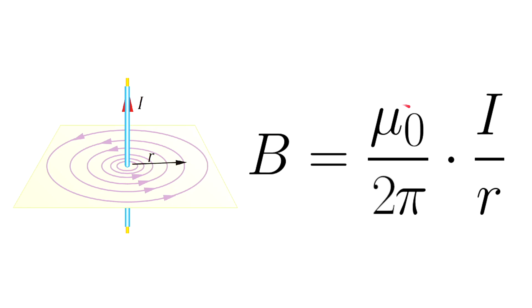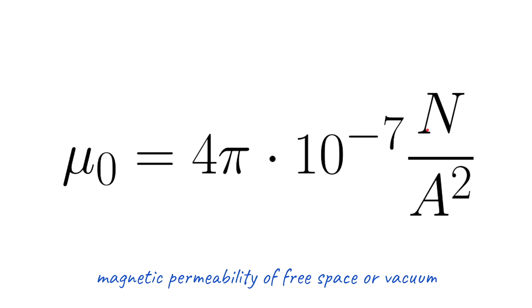And in this formula we have a constant. The constant μ₀ is known as the magnetic permeability of free space or vacuum. And it has this value. The unit of the magnetic permeability is newtons per ampere squared.